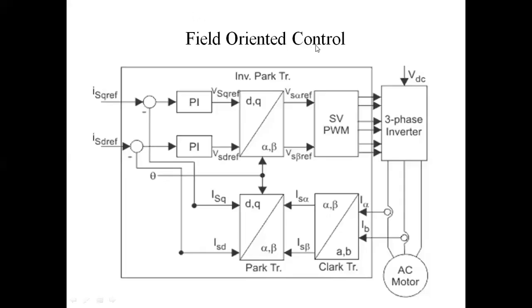This is the field-oriented control of induction motor. This image shows one square box — this is the total control scheme. Here, VDC is the inverter input voltage. The three-phase inverter input voltage is VDC, and the three-phase inverter output terminals are connected to the AC motor. This total inverter converts DC to AC. Here we have Clark transformation, Park transformation, inverse Park transformation, space vector pulse width modulation technique, and a PI controller.